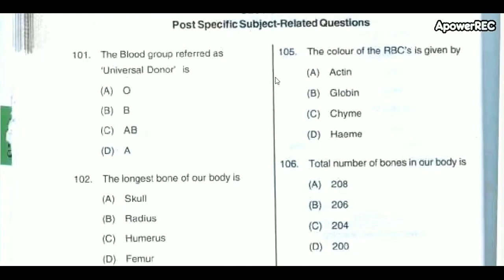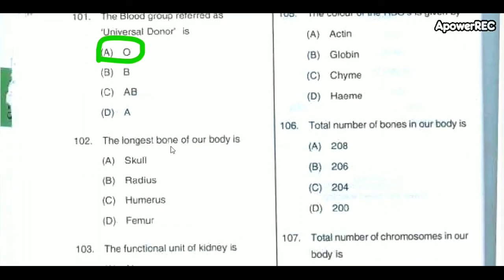First question: The blood group referred to as universal donor is O. The longest bone of our body is the femur.